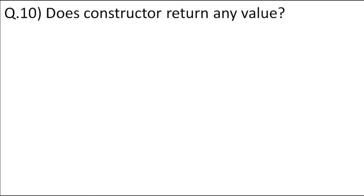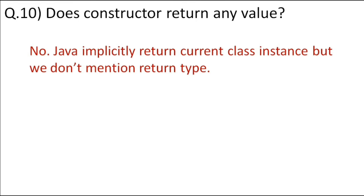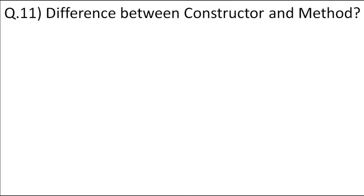Does a constructor return any value? The signature of the constructor does not have any explicit return type, but Java implicitly returns the current instance of the class as the return type. So we do not write any return type with the constructor, but Java implicitly returns the instance of the class.